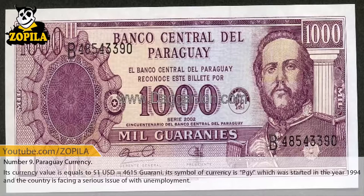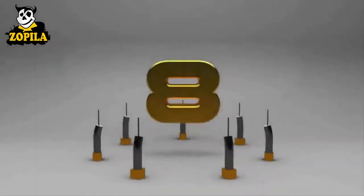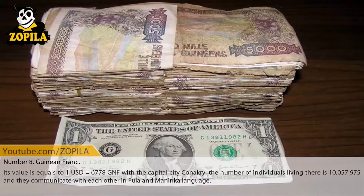Number 9: Paraguay currency. Its currency value is equal to one US dollar equals 4,615 Guarani. Its symbol is PGY, which was started in the year 1994, and the country is facing a serious issue of unemployment.